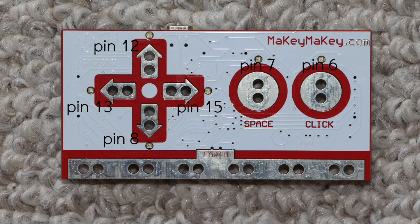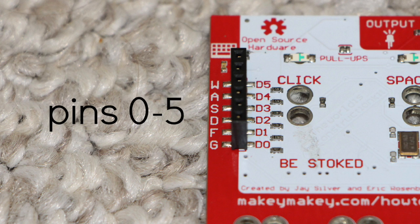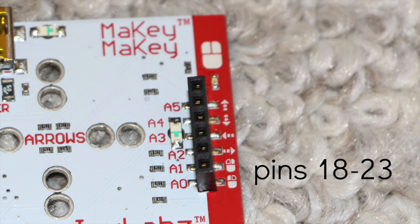You can connect to the arrow keys, the space or the click on the front of the board, pins D0 through D5, or pins A0 through A5. The corresponding Arduino code pin numbers are listed on these diagrams.